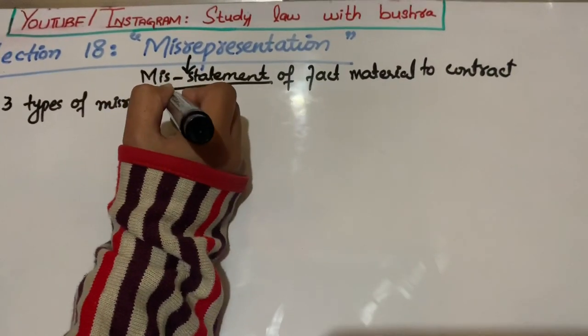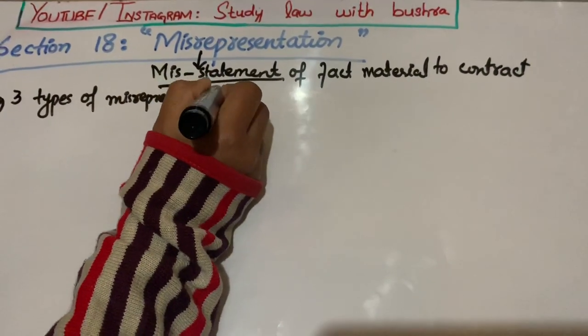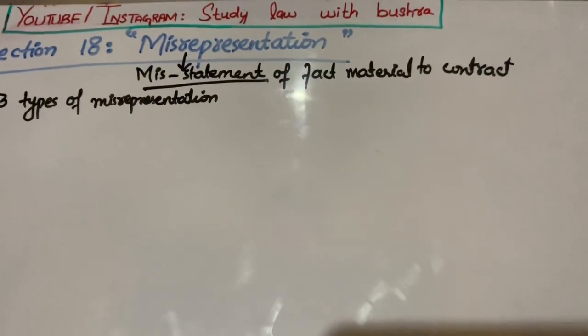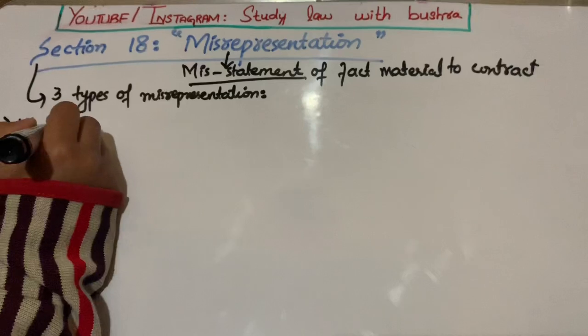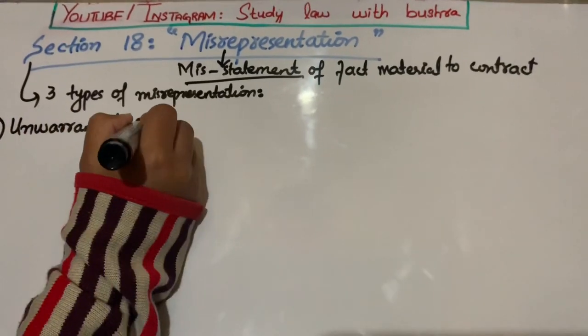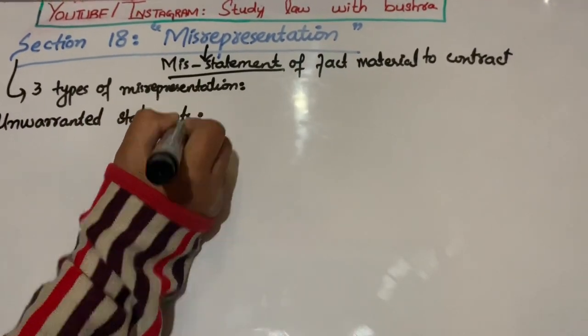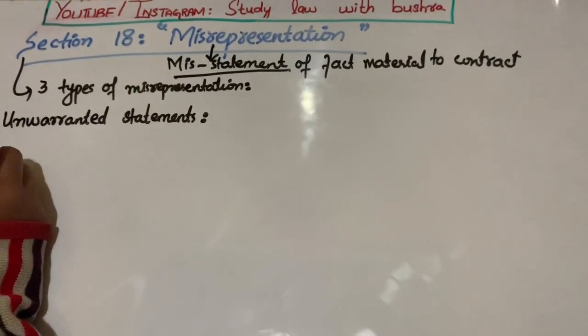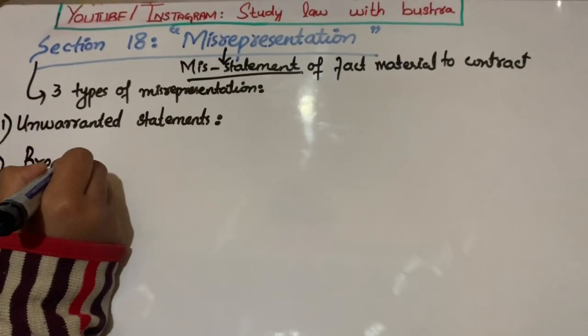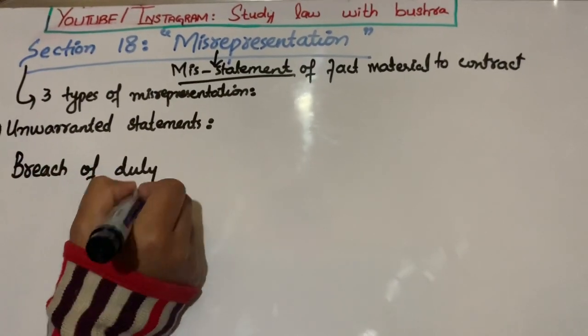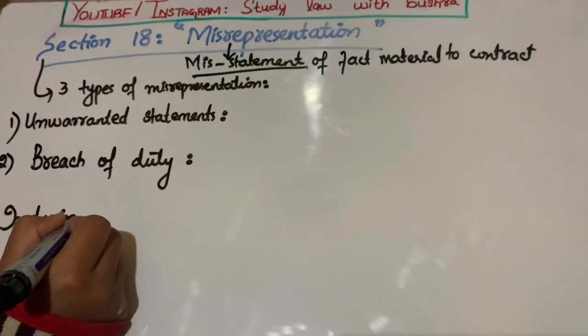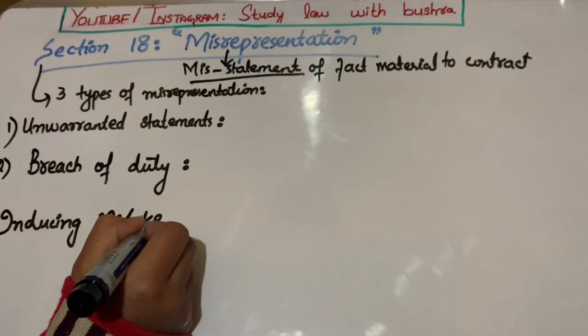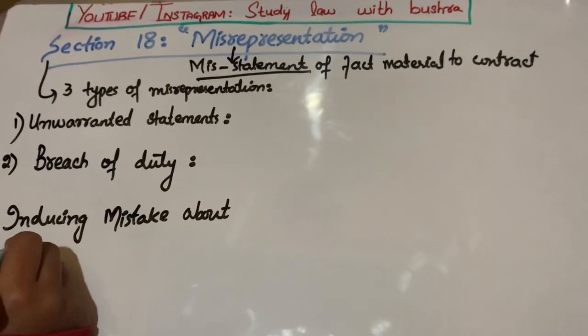Number one: unwarranted statements. Number two: breach of duty. And the third one is inducing mistake about the subject matter. ان تینوں types کو ہم الگ الگ سے discuss کریں گے.